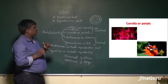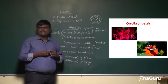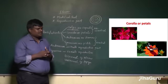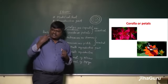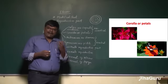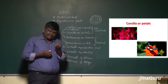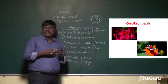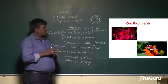Next, the functions of corolla or petals. Corolla or petals are brightly colored parts and can be in different colors. The reason they are colorful is to attract agents for pollination — to attract insects, bats, birds, and other organisms. So the main function of corolla is to attract insects and other pollinators towards the flower for pollination.